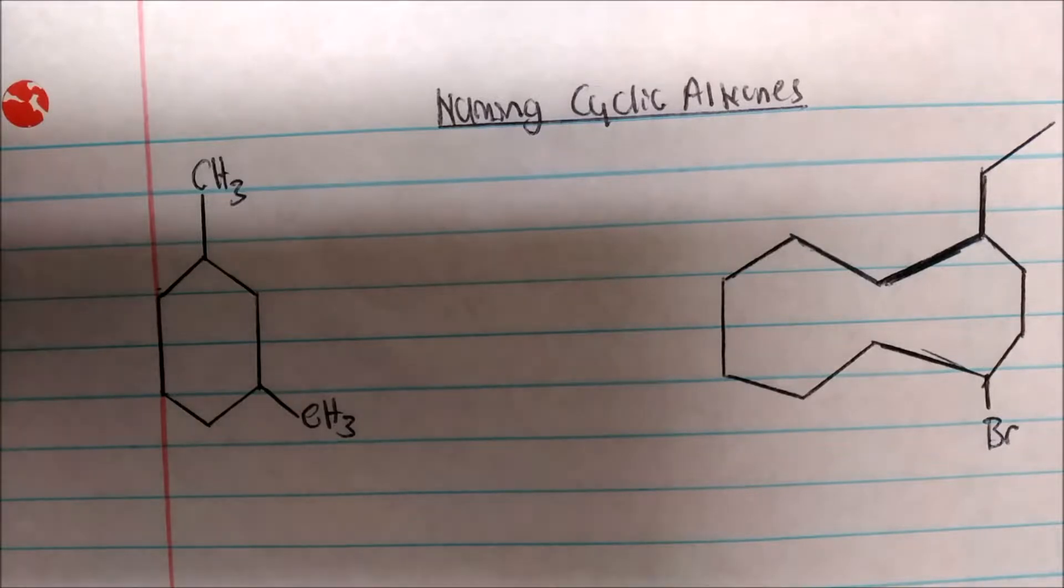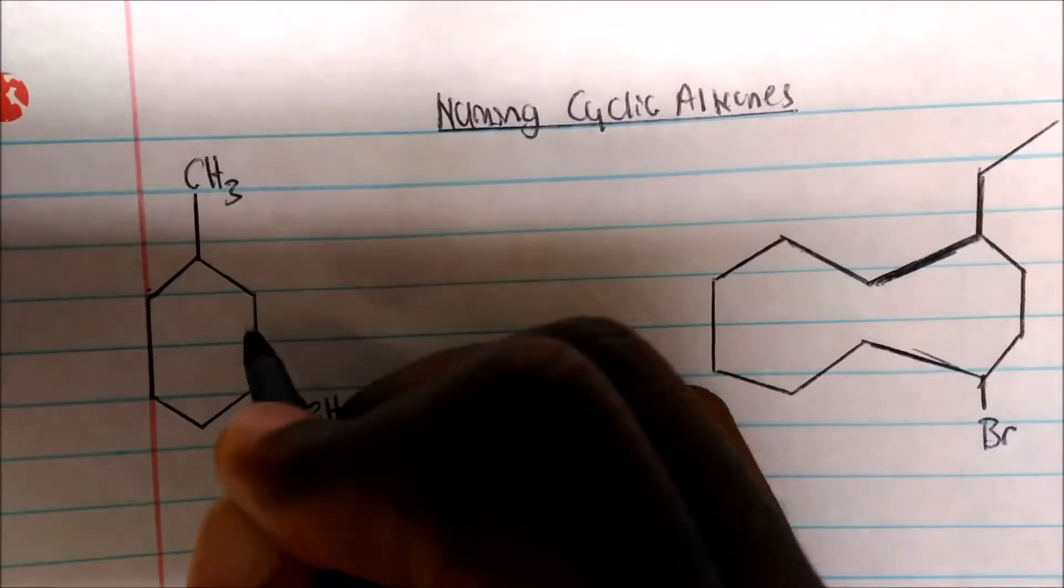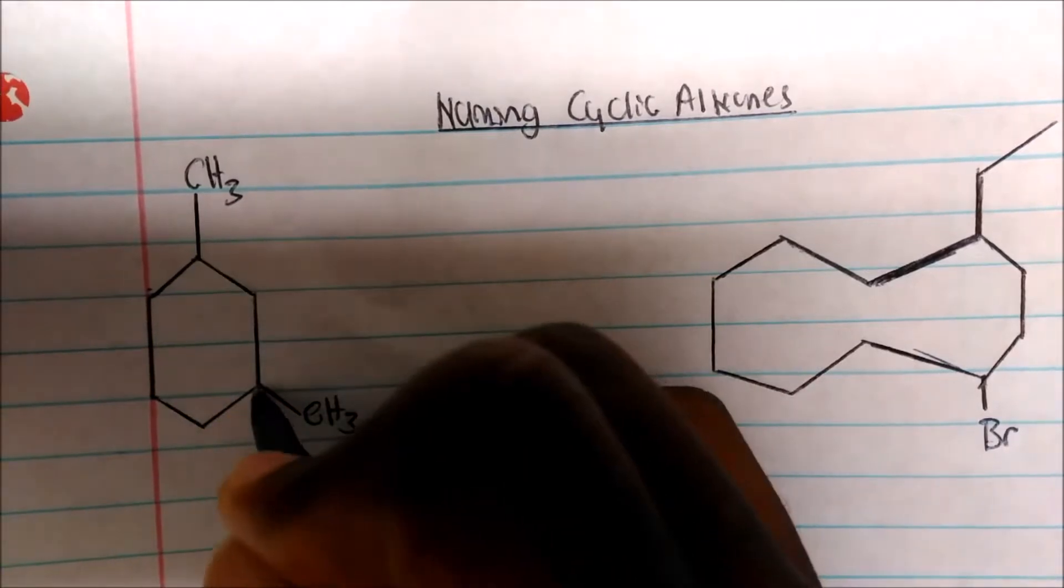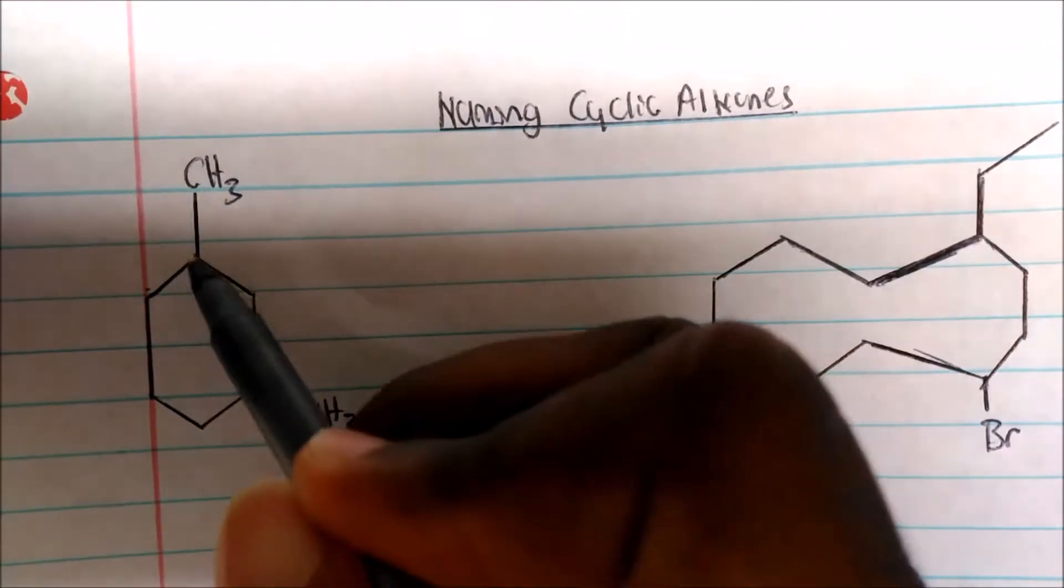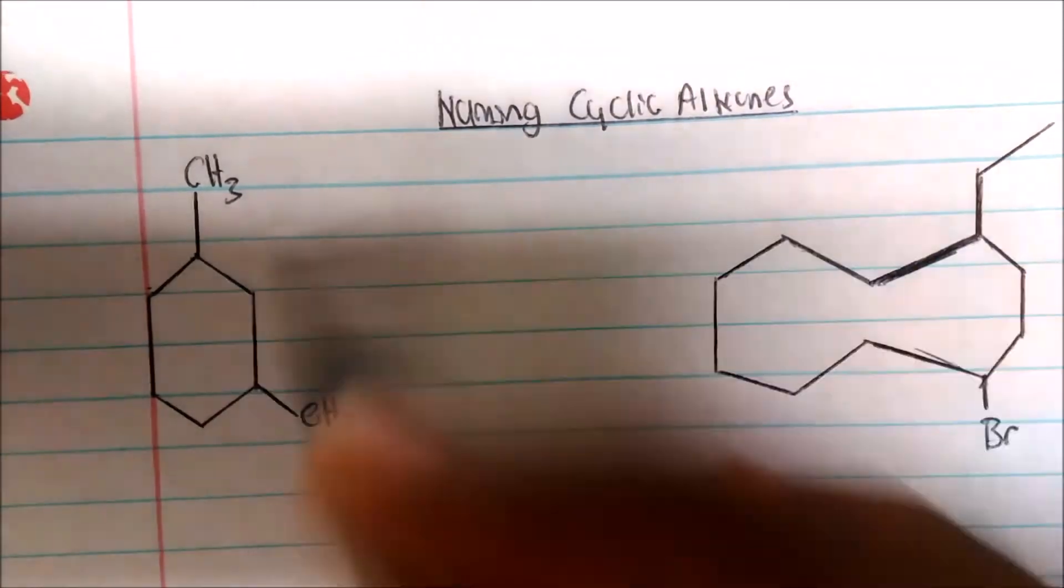Now all I got to do is just label my substituents. So I could label this as carbon one, two, three. So this is carbon one, carbon three. I could also go the other way. I could go carbon one, two, three. It doesn't really matter.